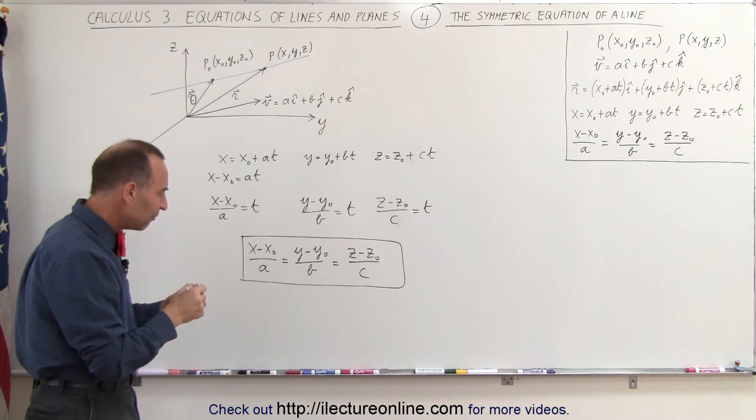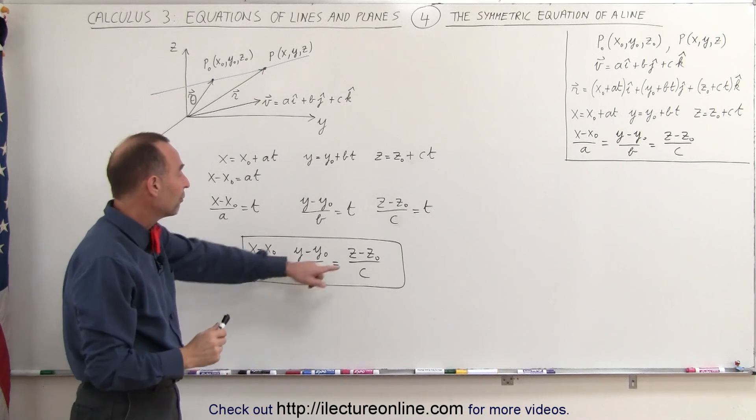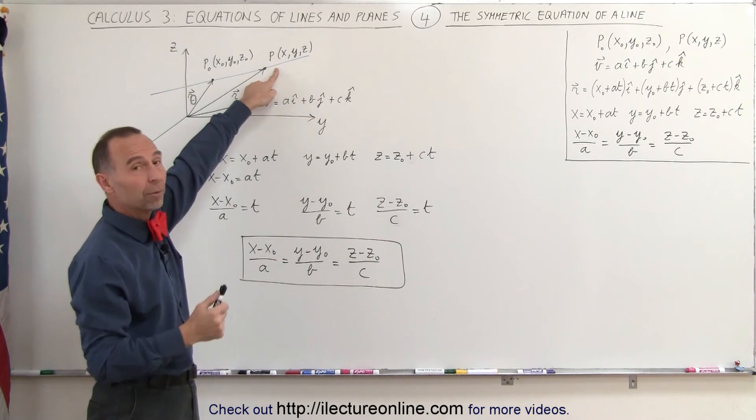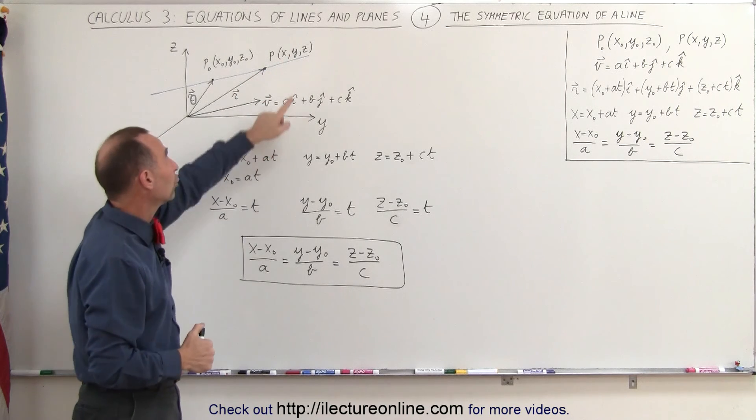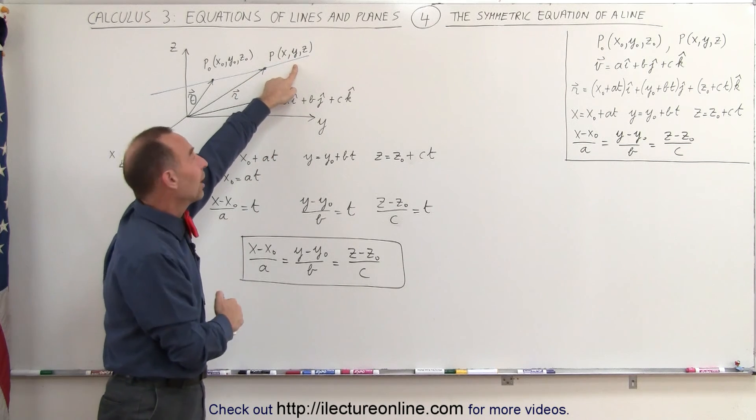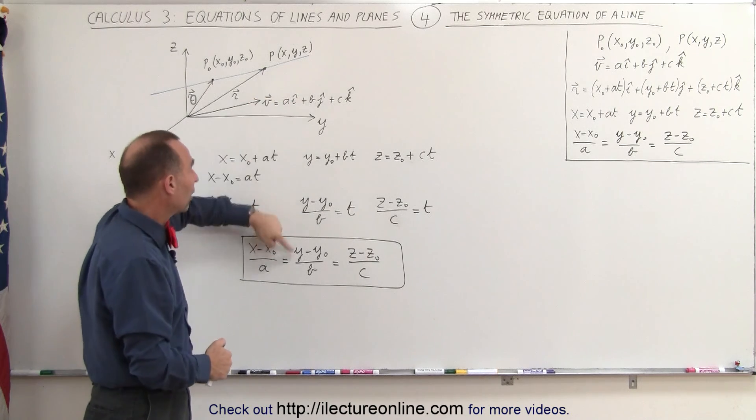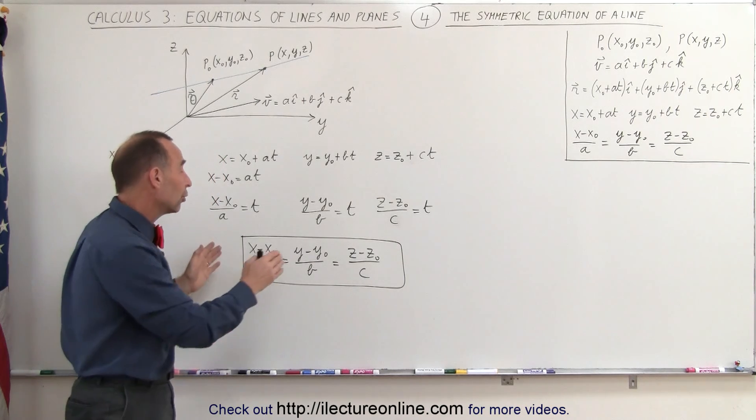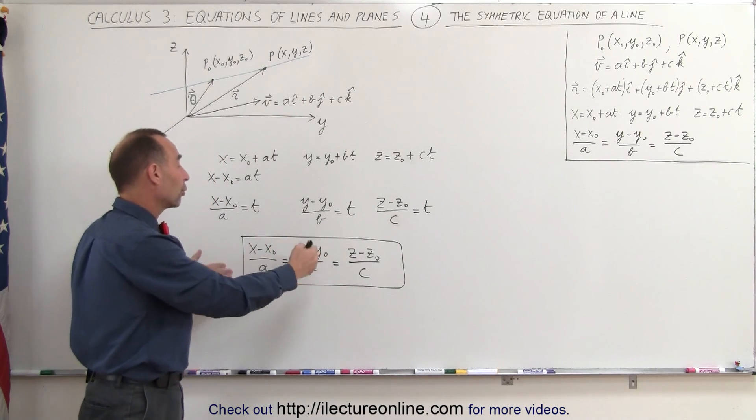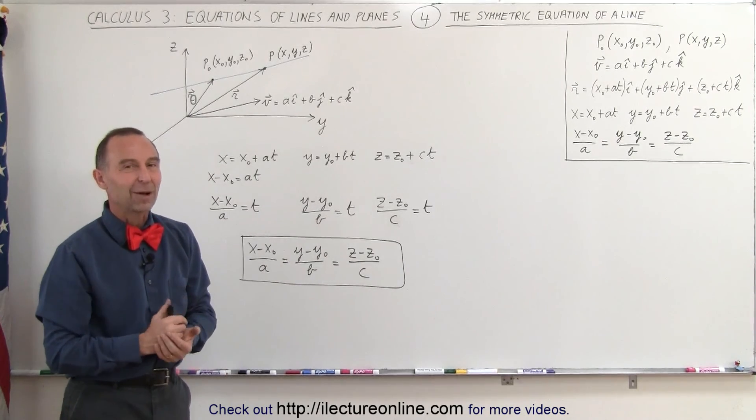Now what happens if you know one of these three components? Let's say you know the value for z. If you know the value for z of your second point, your arbitrary point, that allows you then to find the x and y of that point. Or if you know the y of that point, this equation allows you to find x and z. Or if you know the x of that point, this equation allows you to find y and z. We'll show you that in the next video where we're going to do an example of how to employ or use that symmetric equation for a line. And that's how it's done.